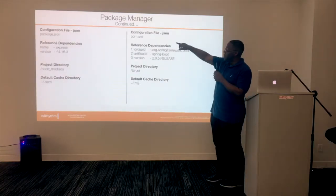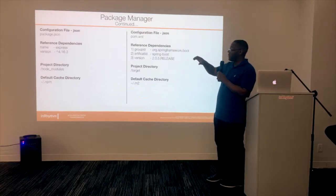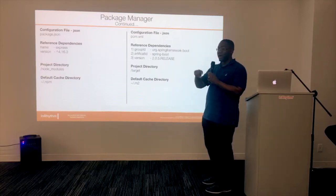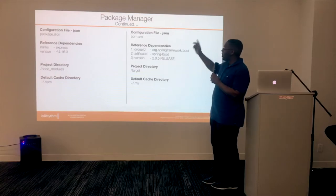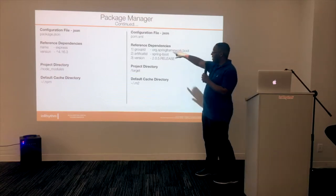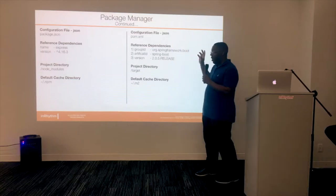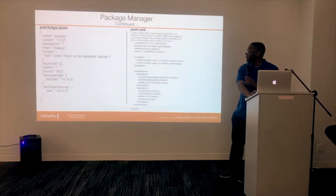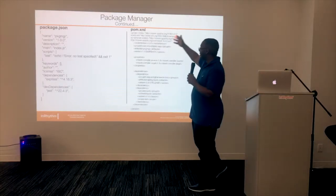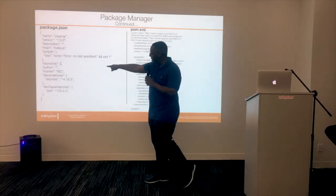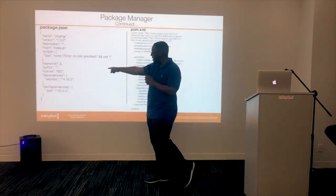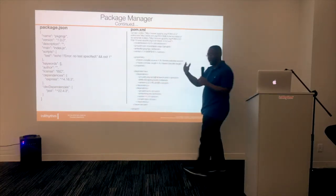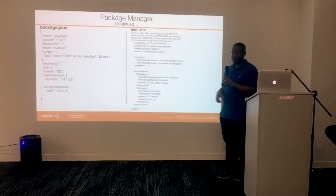In JavaScript, you have the package.json, which is your configuration file. Your dependencies have the name and the version number, and they'll be stored inside the node_modules folder and the cache in .npm. In Java, it's an XML file where you have the group ID, artifact ID, and version, and all dependencies are stored in the /target directory. That's your one-on-one mapping — your package.json versus your pom.xml. You can go to the Maven repository to get the dependency information.